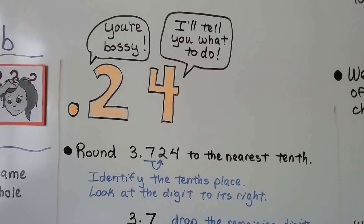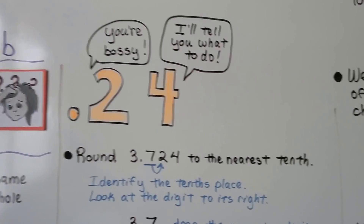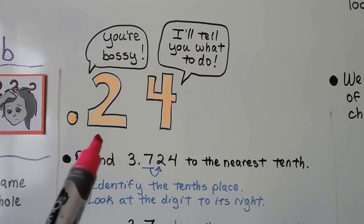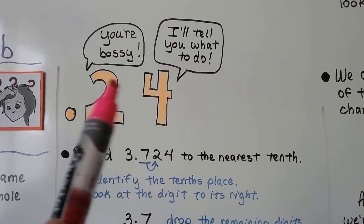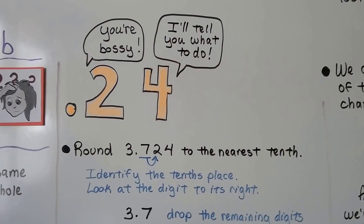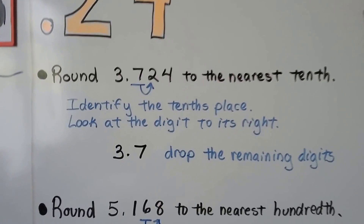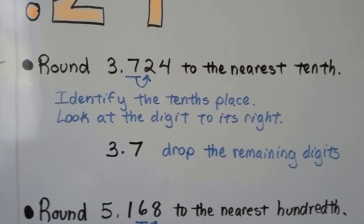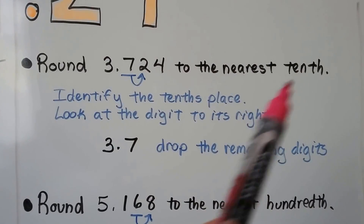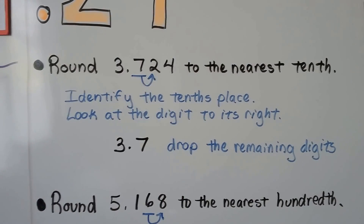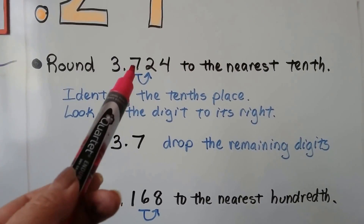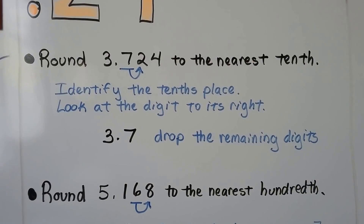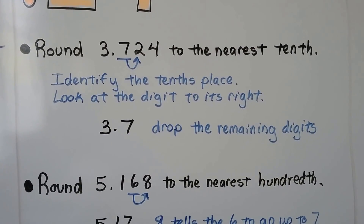So the digit to the right is telling that digit what to do. Whichever place value we're rounding to, we identify that place value, and whatever digit is to the right tells it what to do. If we're going to round 3.724 — which is 3 and 724 thousandths — to the nearest tenth, we identify the tenths place. The 7 is in the tenths place. We look at the digit to the right — it's a 2 — so it stays the same. It rounds to 3.7, and we just drop the remaining digits, the 2 and the 4.